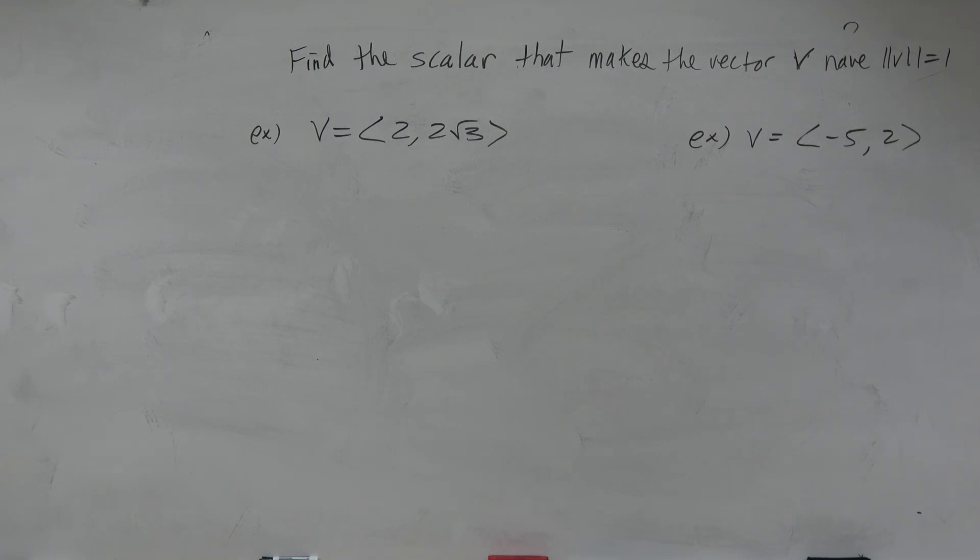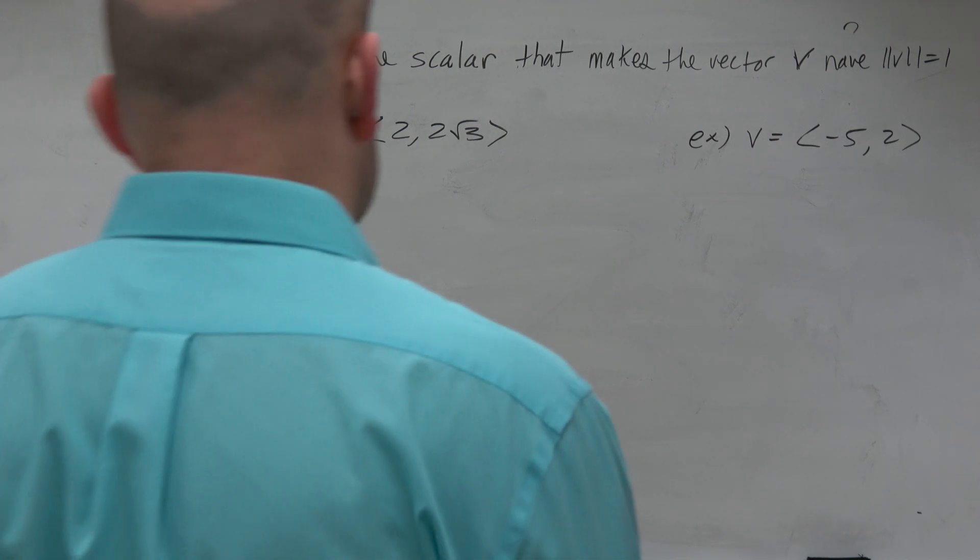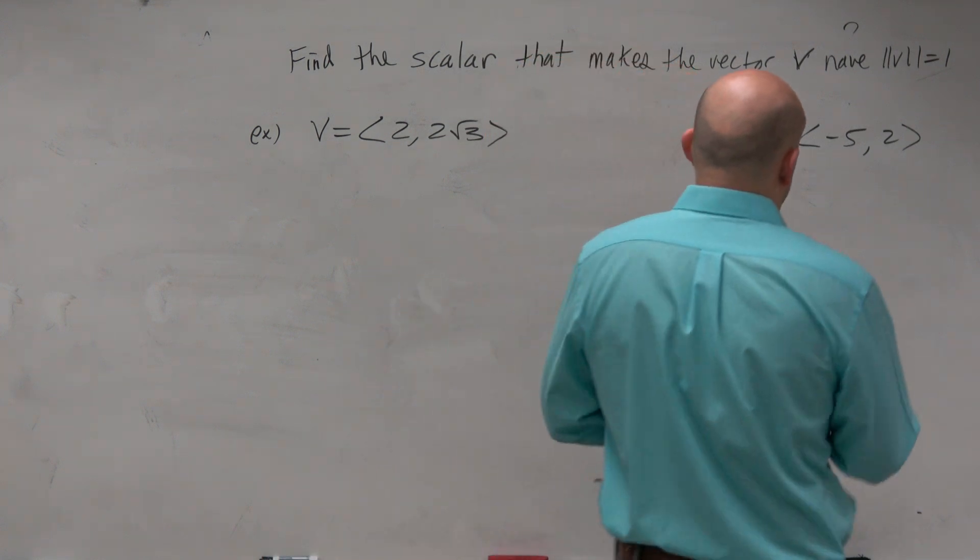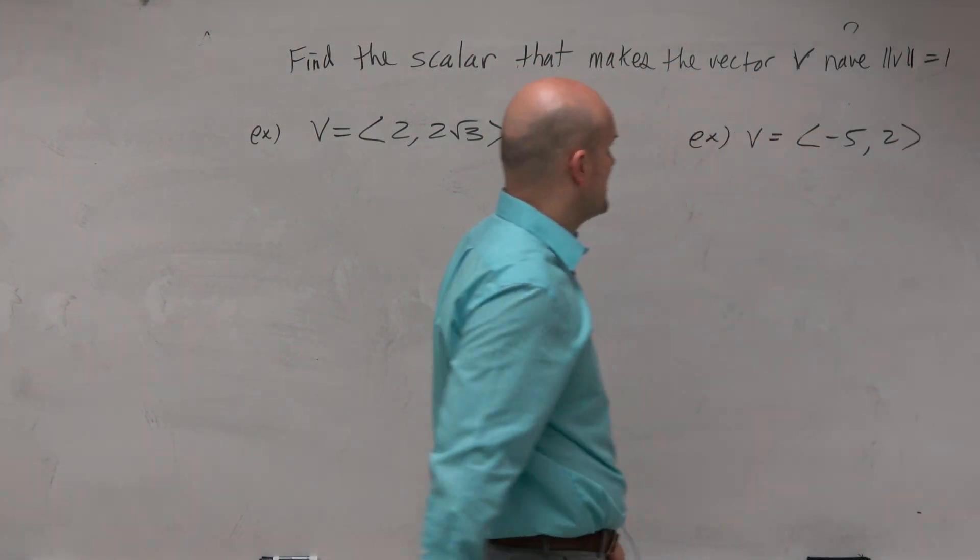Ladies and gentlemen, on this example, it says find the scalar that makes the vector v have a magnitude equal to 1. So let's just go ahead and do this one example at a time.